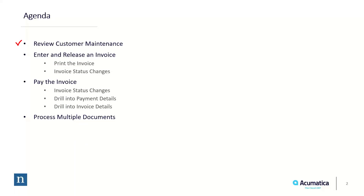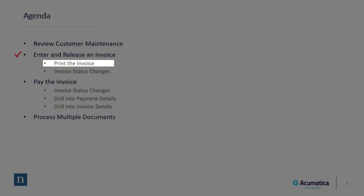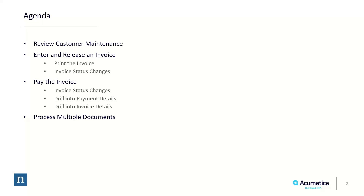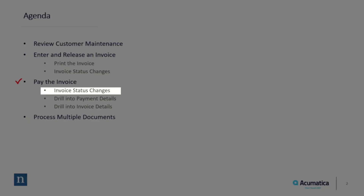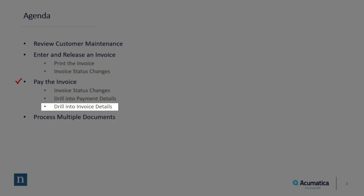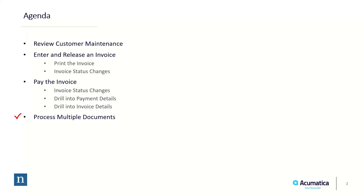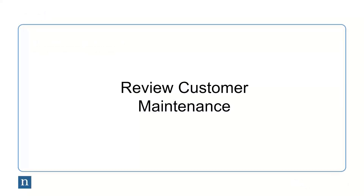The first thing we're going to do is look at a couple of settings in customer maintenance that affect invoice processing. Then we're going to enter and release an invoice, print the invoice, and take a look at how the status of the invoice changes as we go through the process. Then we'll show you how to pay an invoice, look at the status changes, and how you can drill into the payment details and invoice details. Lastly, we're going to look at how you can process multiple documents at a time.